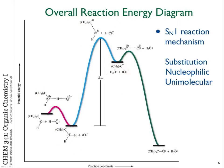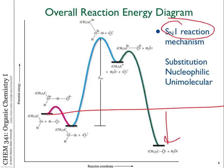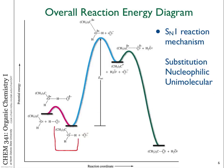Overall, this reaction is exothermic because we start from a higher energy and end up at lower energy in the product. This reaction mechanism is one we refer to as an SN1 reaction. SN1 stands for: S = substitution, N = nucleophilic (a chloride nucleophile is replacing the OH group), and 1 = unimolecular, meaning in the slowest rate-determining step there's only one molecule involved — the protonated intermediate breaking a bond and forming the carbocation. No other reagent or molecule is involved in that step.